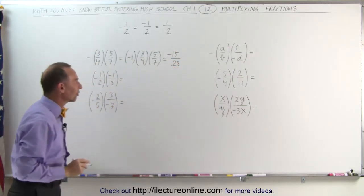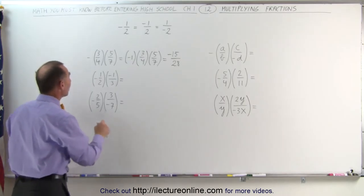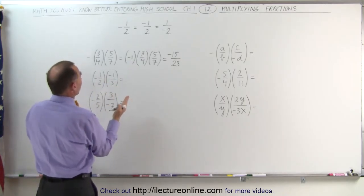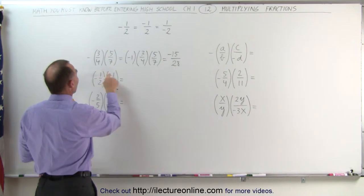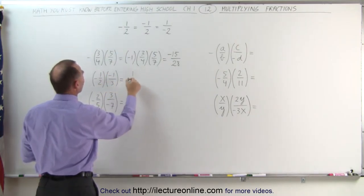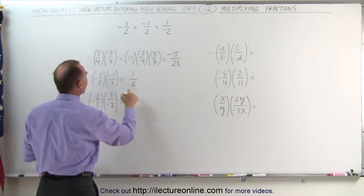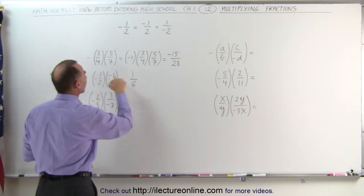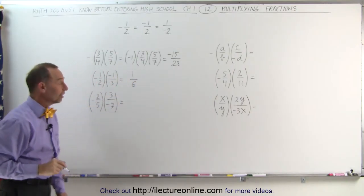The next one: we're going to ignore the negative signs first. This is 1 times 1 in the numerator, and 2 times 3 in the denominator, giving one sixth. There are two negative signs, therefore the answer will be positive.